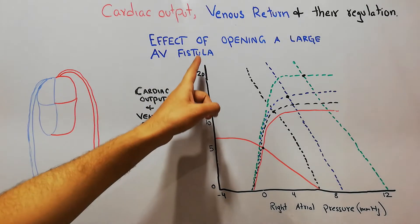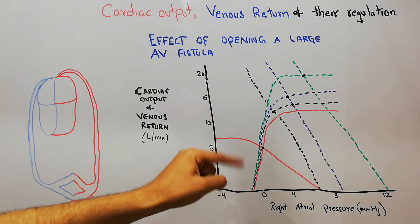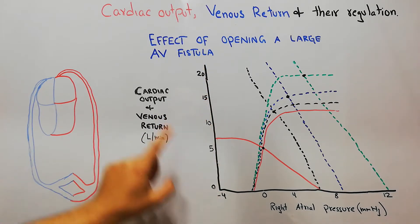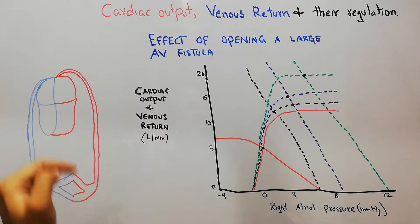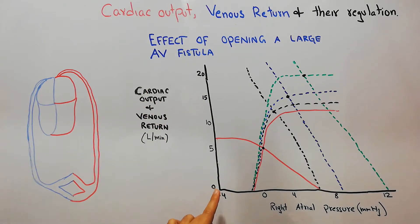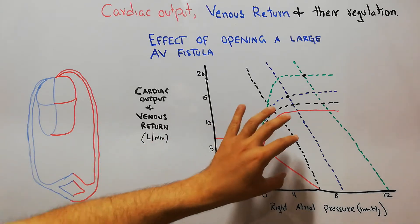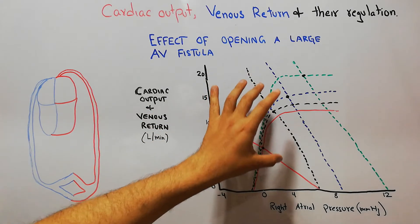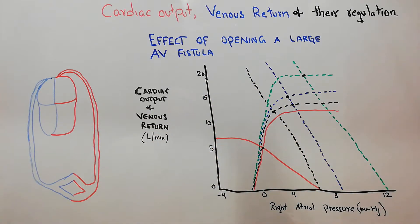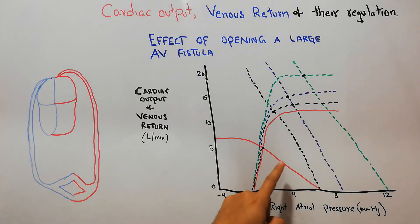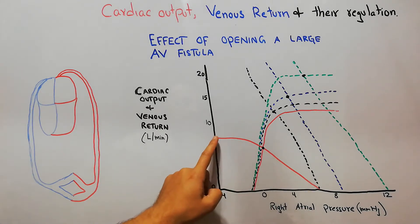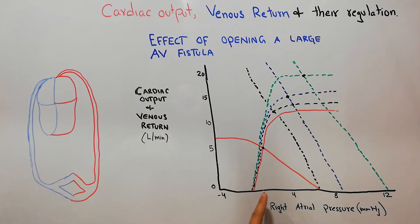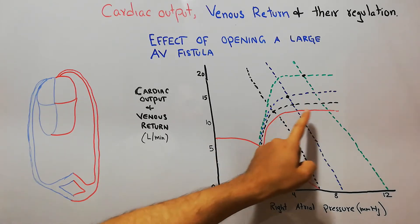Here we have our combined cardiac output and venous return curve. On the y-axis we are showing the cardiac output and the venous return, and on the x-axis we have the right atrial pressure. We will also be documenting the mean systemic filling pressure on the x-axis. The red color is showing the normal venous return curve and the normal cardiac output curve.